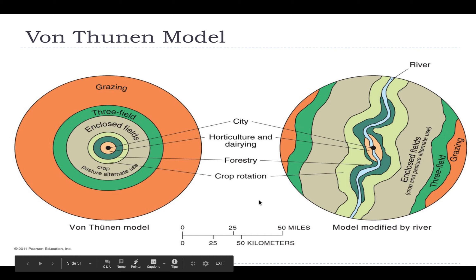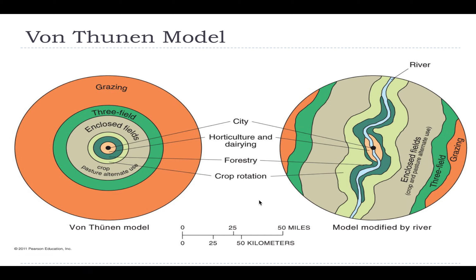Von Thünen's model is the first commercial market model. We can see how it applies to concentric zone rings, but also how it applies to early civilizations that resided along rivers, showing how the model would work on a river as well.